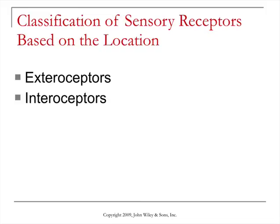Interoceptors are sensory receptors that are located in places like blood vessels, the visceral organs, and muscles. The purpose of this is to monitor the internal environment of your body. You'll get information from these interoceptors that has to do with things like your blood pressure. These messages aren't consciously perceived — they're sending messages to your brainstem, but you're not aware of what those messages are.